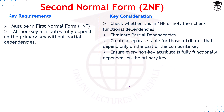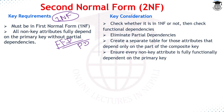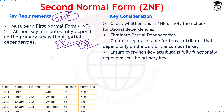To convert to 2NF, the relation must first be in 1NF, and then all non-key attributes must fully depend on the primary key without any partial dependency. Partial dependency means a non-key attribute depends on only part of a composite primary key, not the whole key.